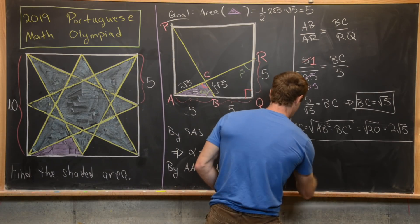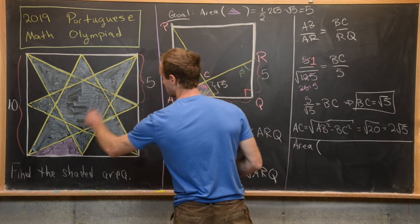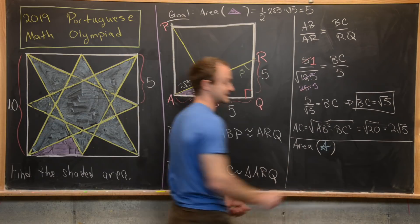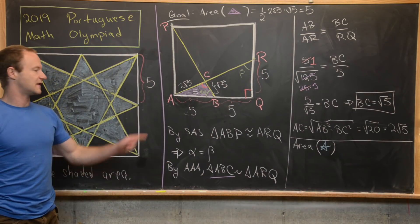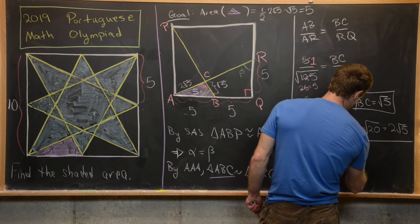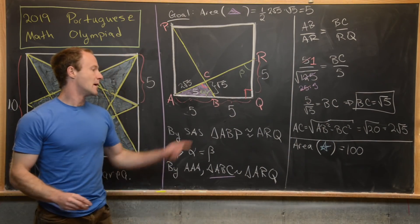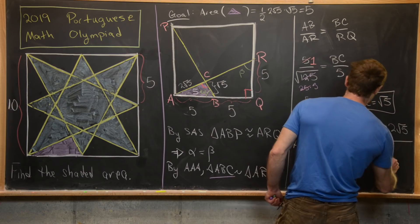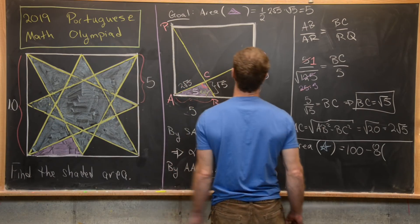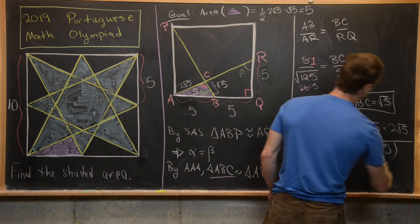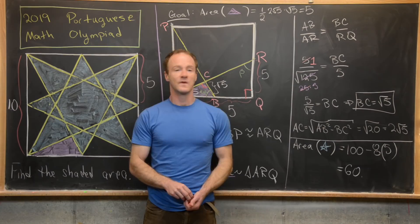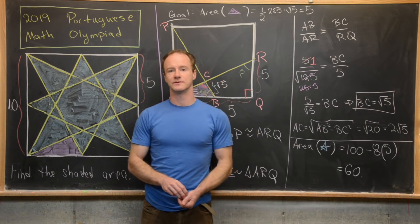Now for our goal: the area of the blue shaded star equals the area of the entire square minus 8 times the area of the purple triangle. That's 100 minus 8 times 5, which is 100 minus 40, giving us 60. So the area of the shaded region is 60, and that's a good place to stop.